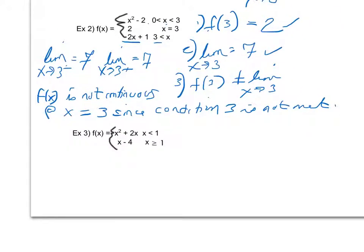Finally, looking at example three — this would be a good one to pause the video and try on your own to see if you understand the concept, then hit play and make sure your answer matches mine. For this function, the quadratic piece is continuous and the linear piece is continuous. My concern is what's happening at x equals one: am I switching smoothly from quadratic to linear, or is there a jump?